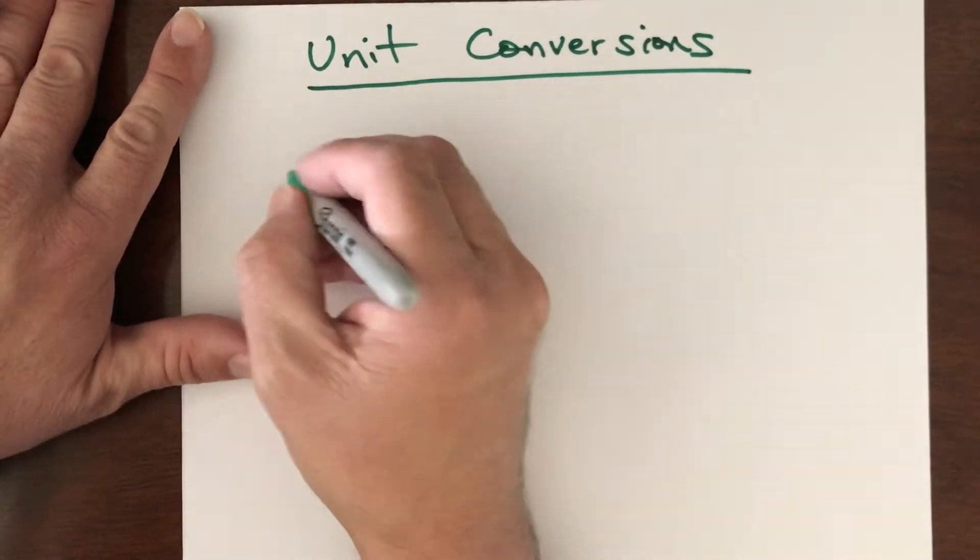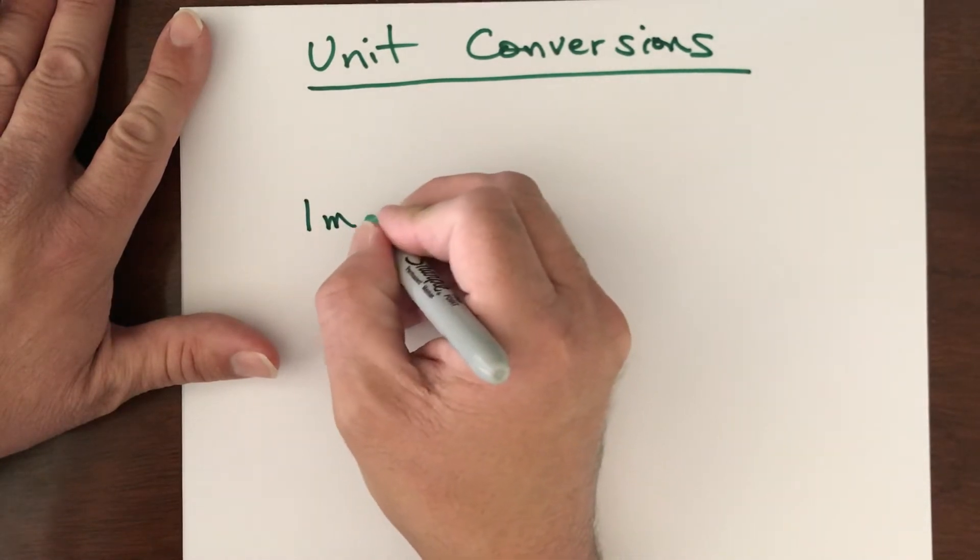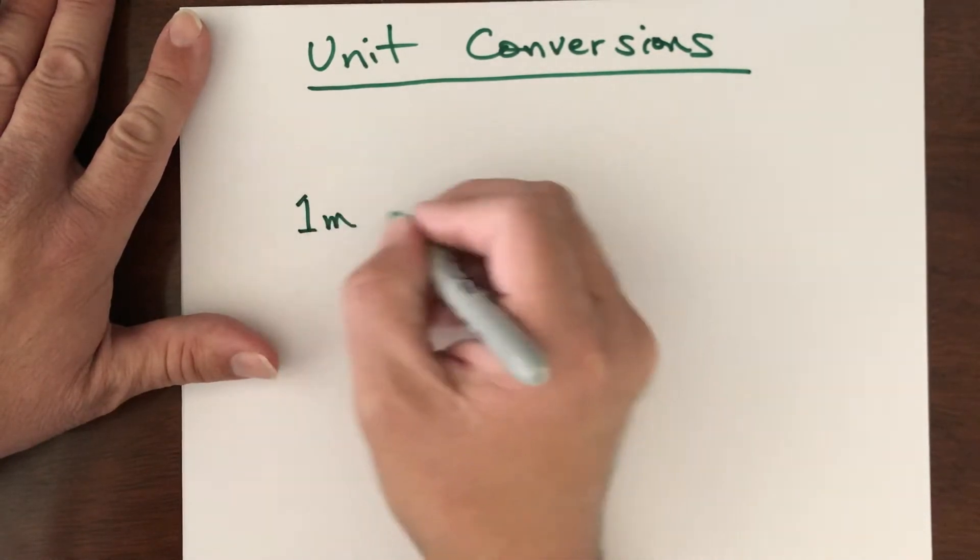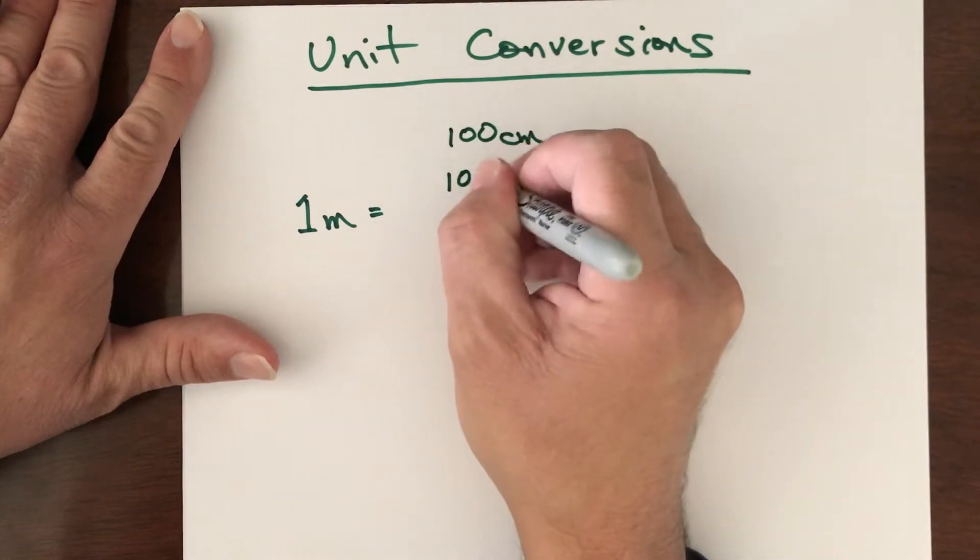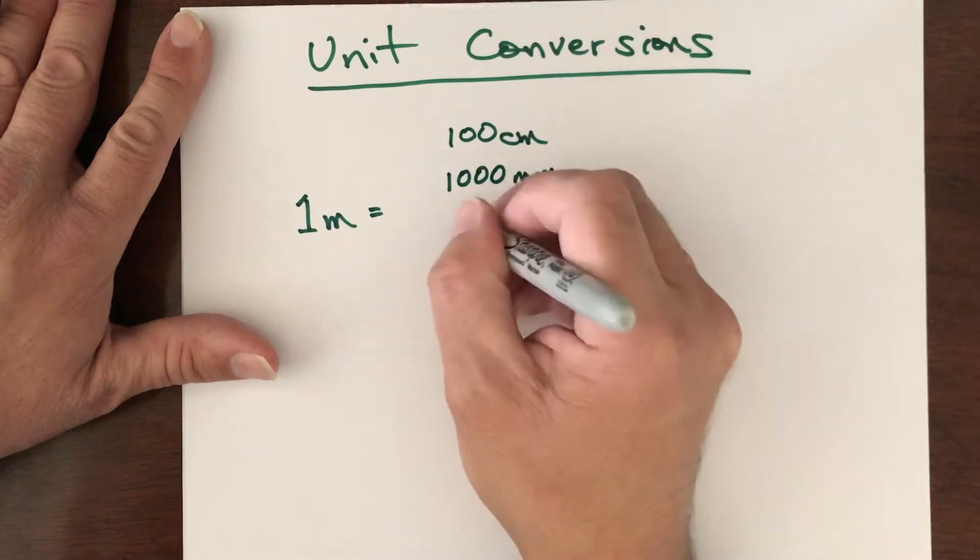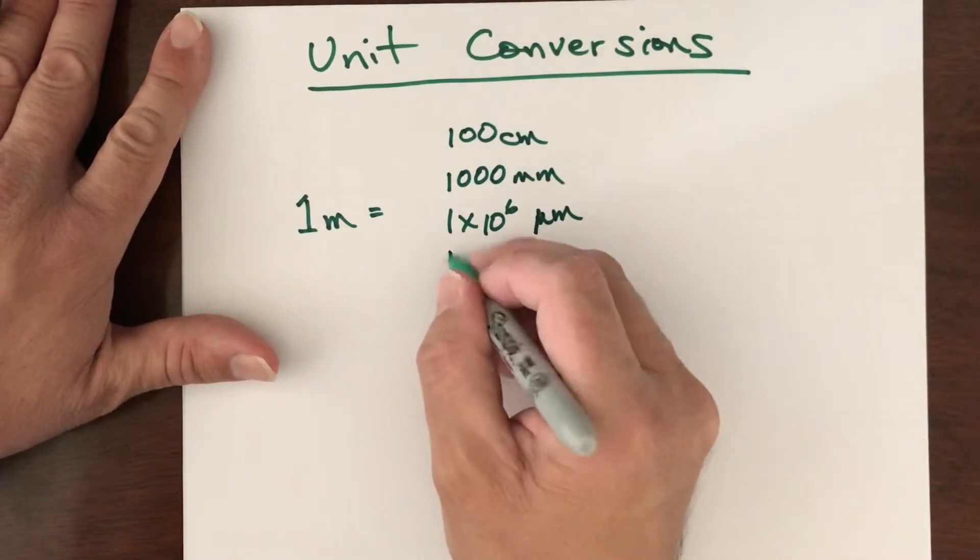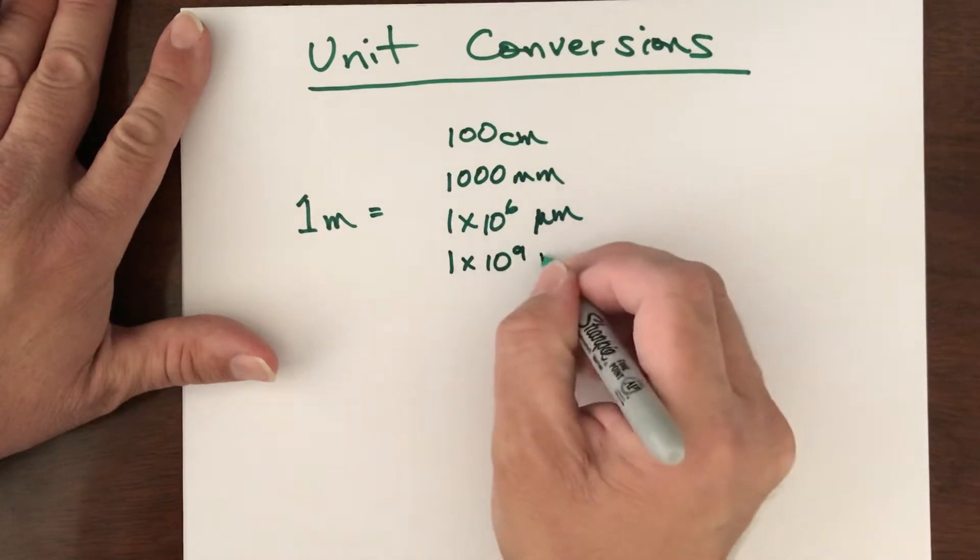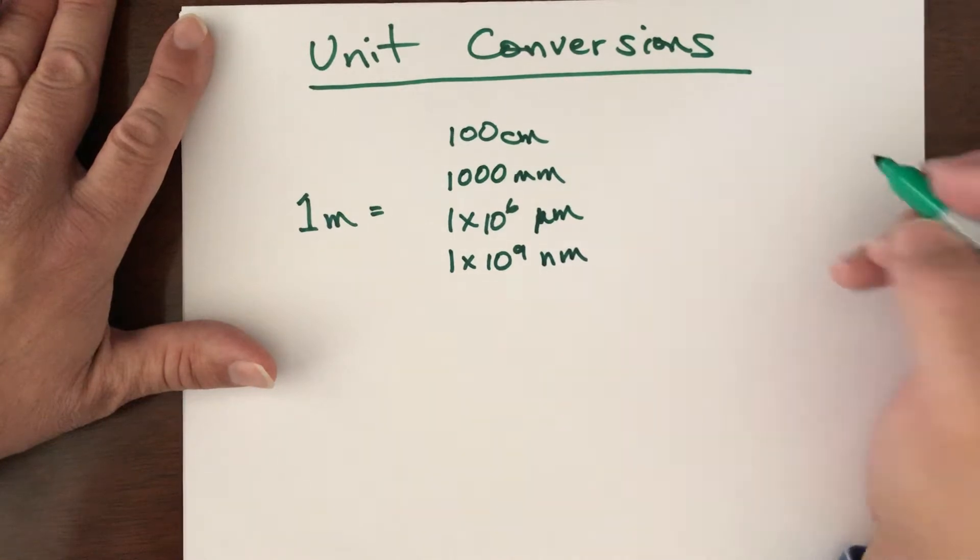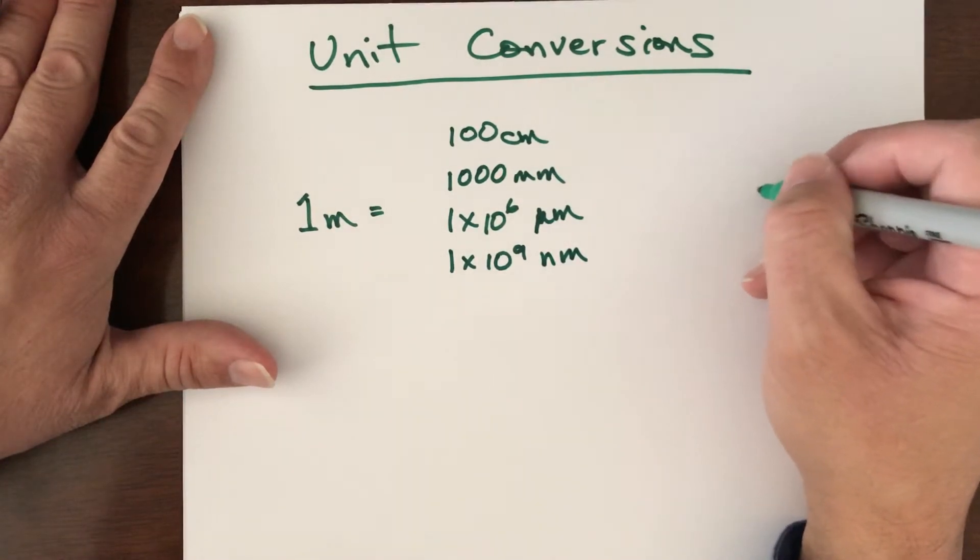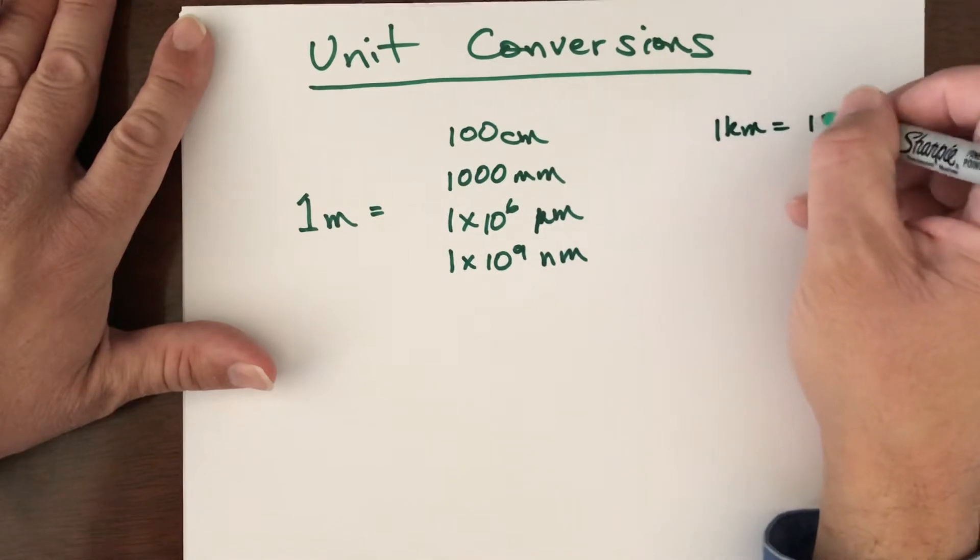So the key thing is that if you have one meter in the metric system that's going to be always equal to a hundred centimeters, a thousand millimeters, a million micrometers, or a billion nanometers. And these go on, you can have various other equalities. So for example, one kilometer is a thousand meters.